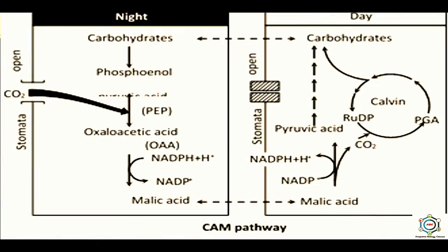During the day when stomata are closed, the malic acid is decarboxylated to produce pyruvic acid and release carbon dioxide — this process is termed deacidification. The pyruvic acid may be oxidized to carbon dioxide by the Krebs cycle or converted to phosphoenolpyruvic acid. The carbon dioxide released by deacidification is accepted by ribulose bisphosphate and fixed to carbohydrate by the C3 cycle.